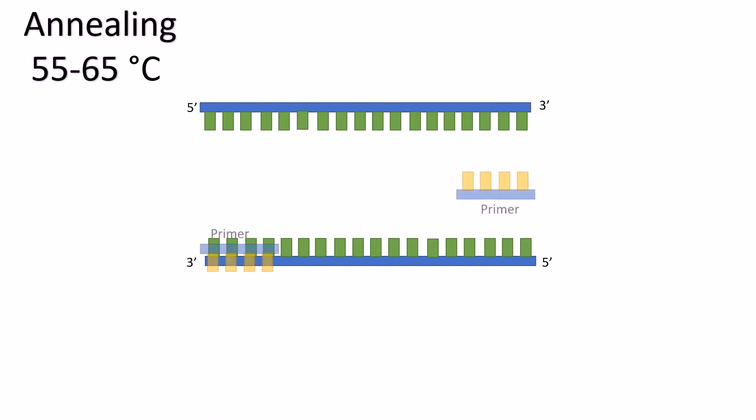The next step is annealing of DNA primers. At this step temperature is cooled to 55 to 65 degrees Celsius so that the primers can anneal to their complementary strands.